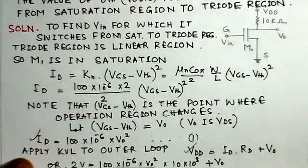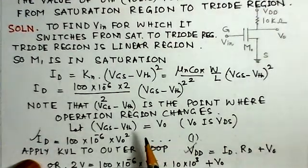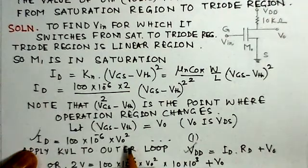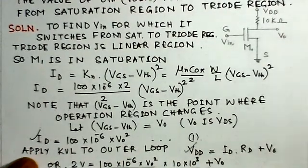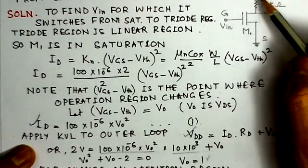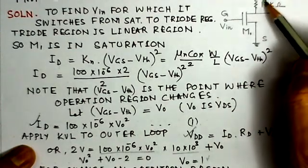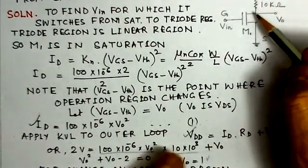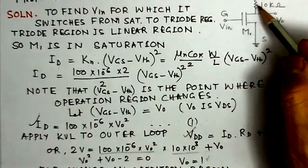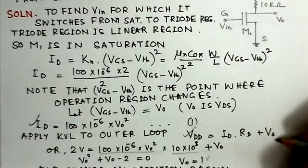This is ID equals to 1 times 10 to the power of minus 6 V0 squared. Now, if we see at the output side, we can apply KVL here. That means, here VDD should be equal to ID RD plus V0.